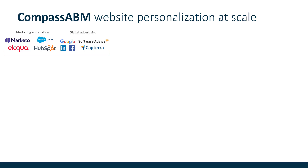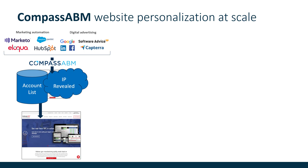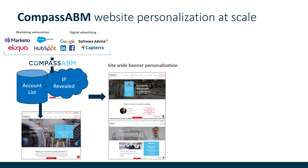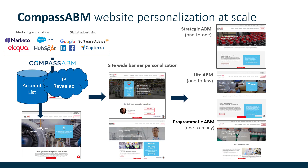Looking at how this works technically: at the top, you've got marketing automation contacting your customers and digital advertising including search bringing traffic to your website. When Compass ABM is activated, we look at that IP and compare it to an account list. Instead of seeing a generic page, we swap that out and they see a customized banner — either specific to their account with their name and logo, or an industry-specific image and message. Other banners around the site continue to bring people into one of the three pages: the strategic page, the light page, or the programmatic pages.